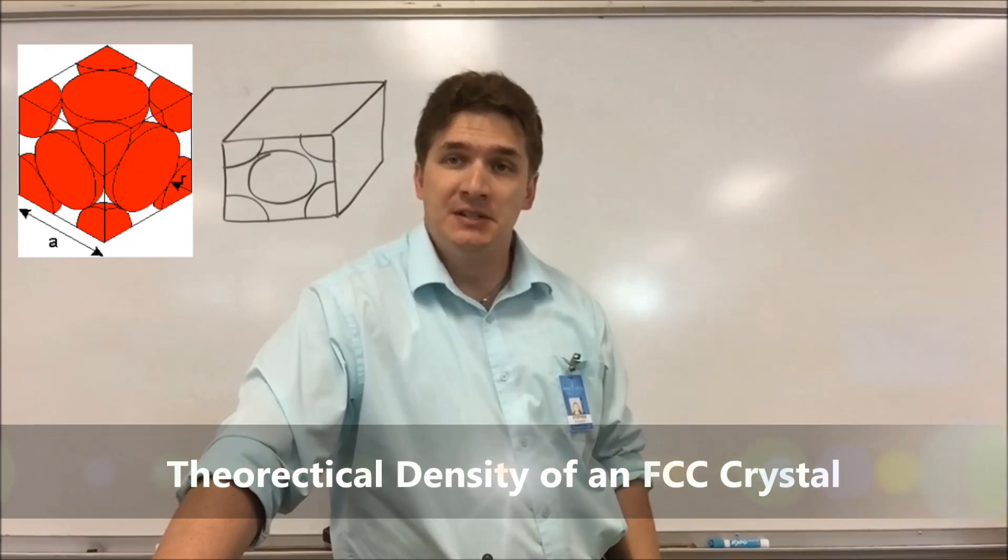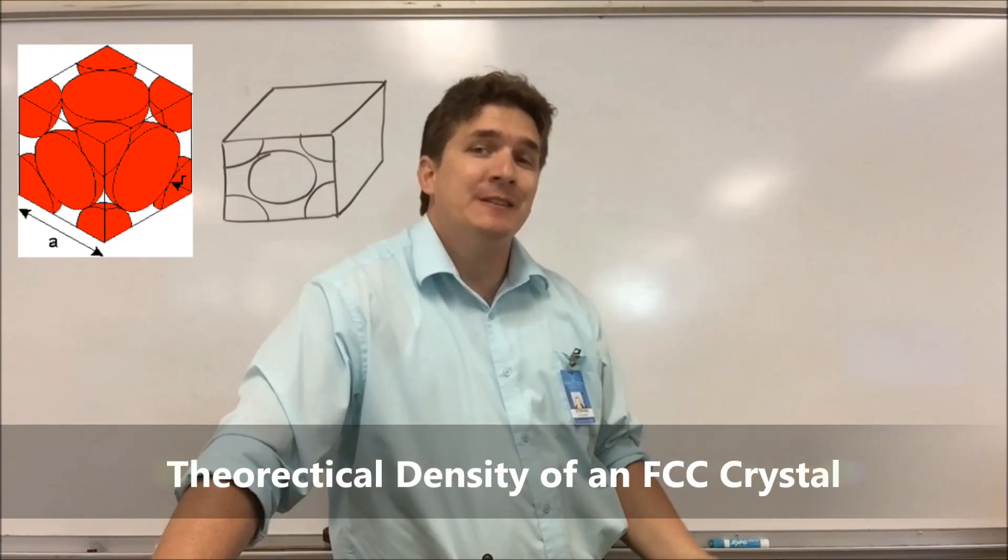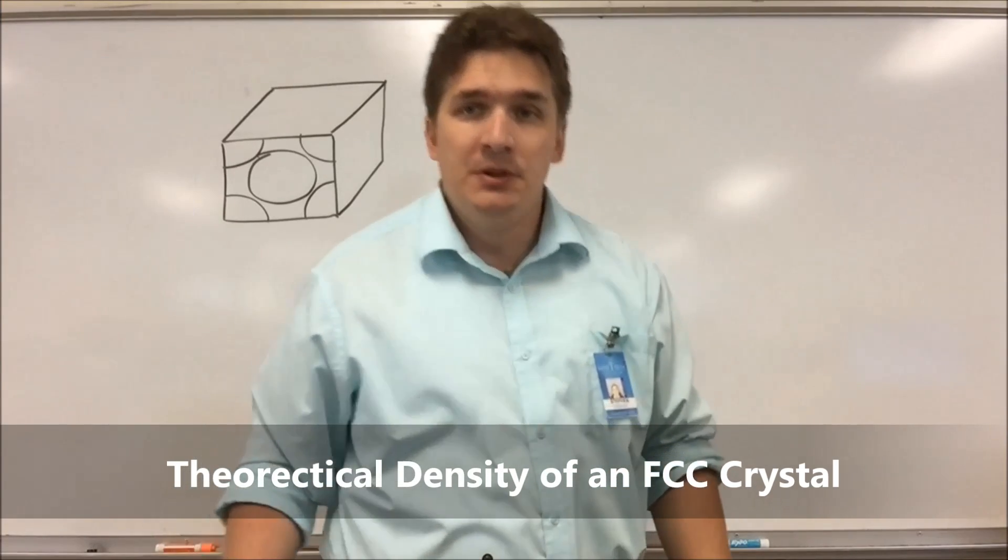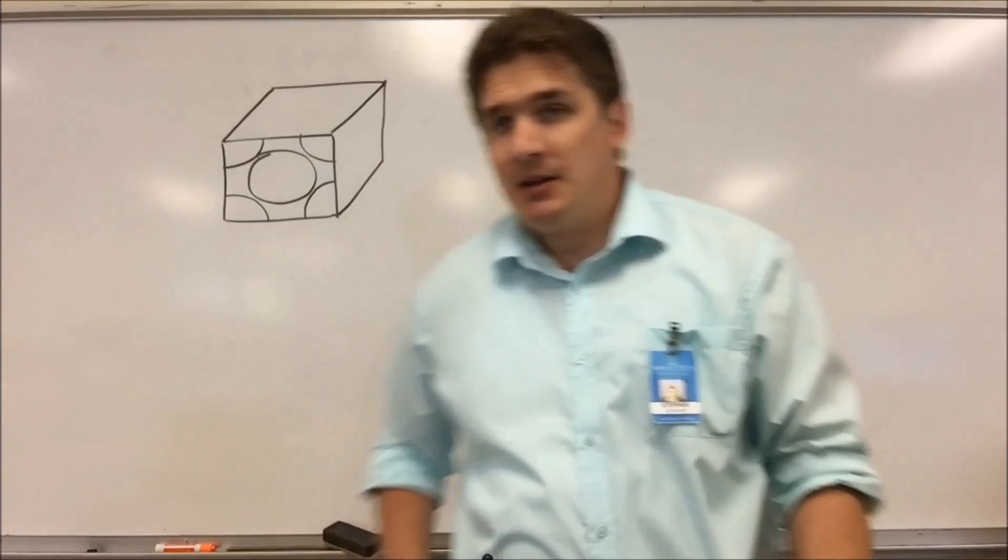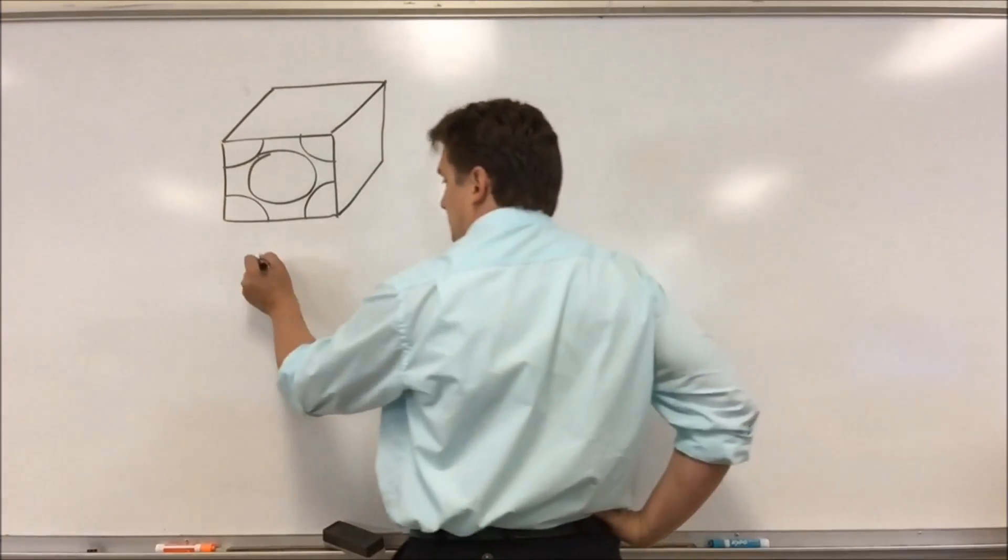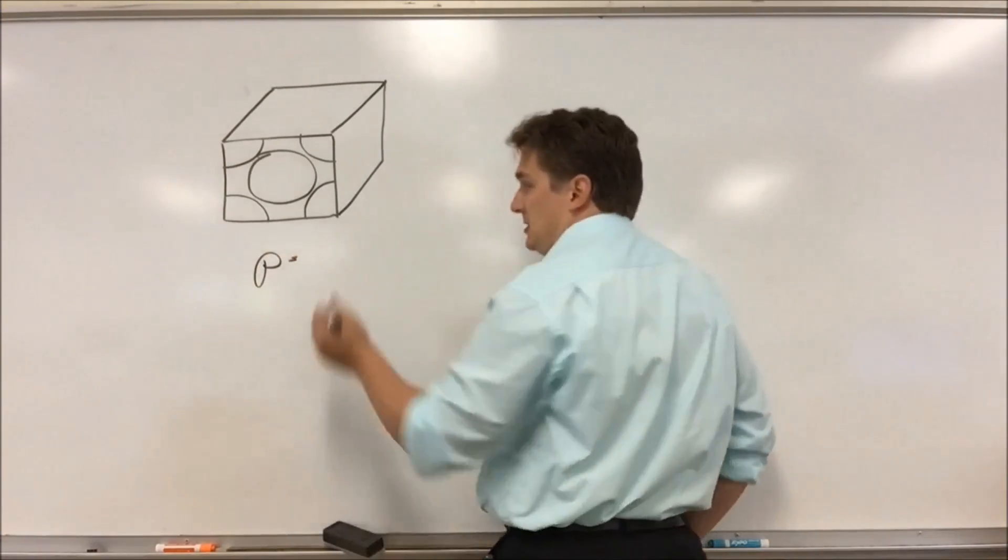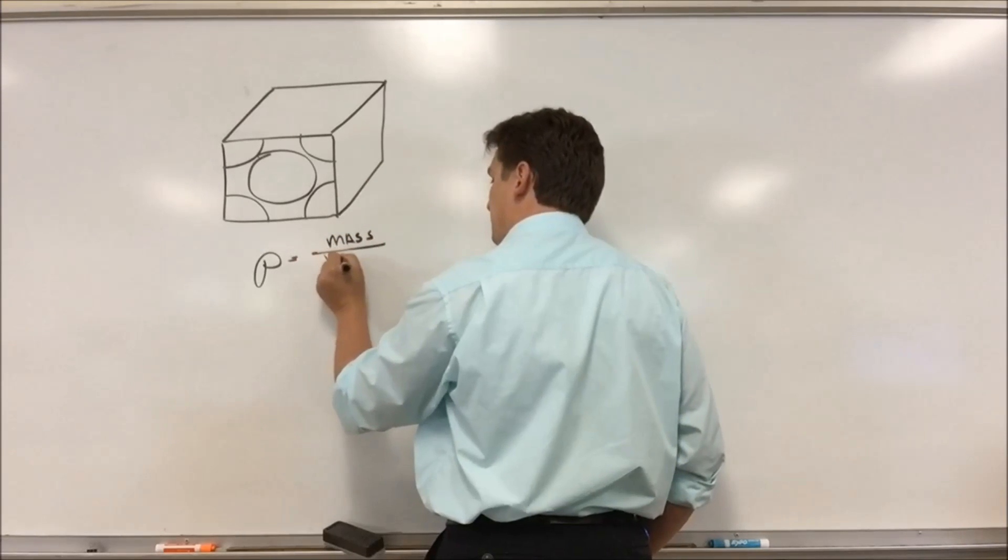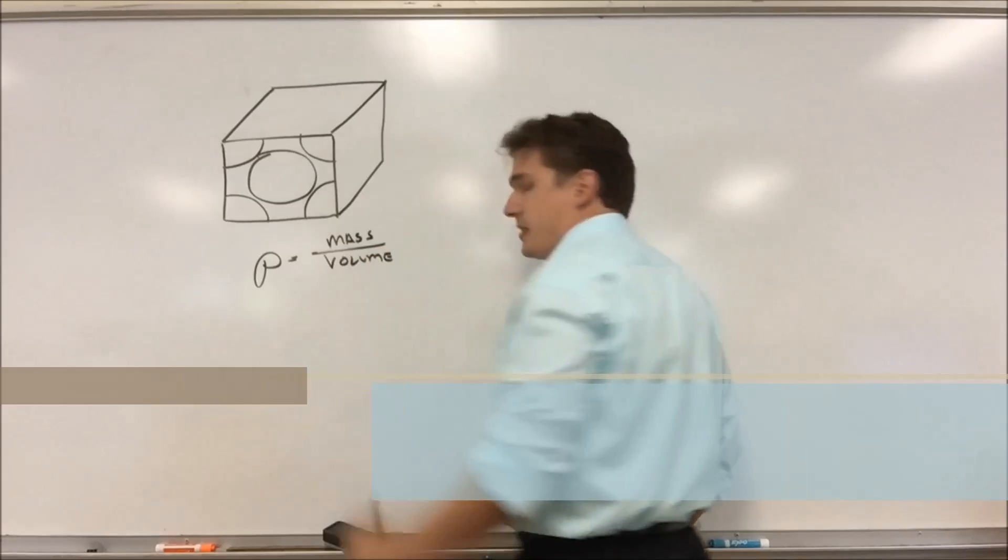First crystal structure, the FCC, face-centered cubic crystal. We want to figure out the density, theoretical density, of an FCC crystal. What we're going to use here is geometry. Now density, rho, is simply just defined as mass over volume.